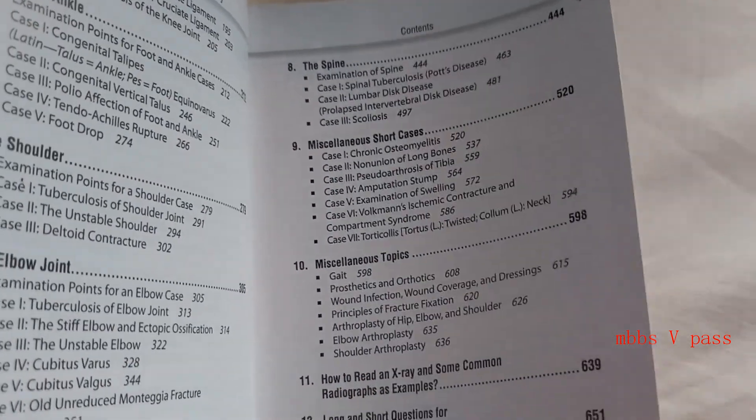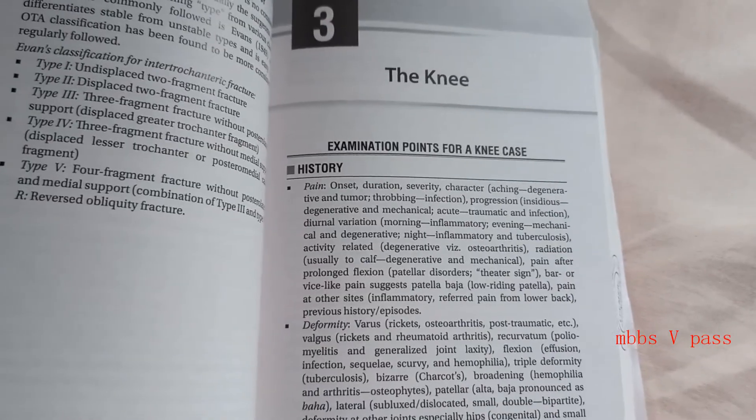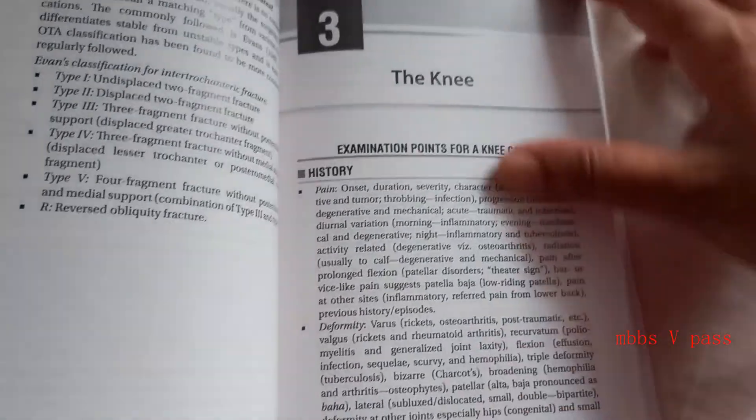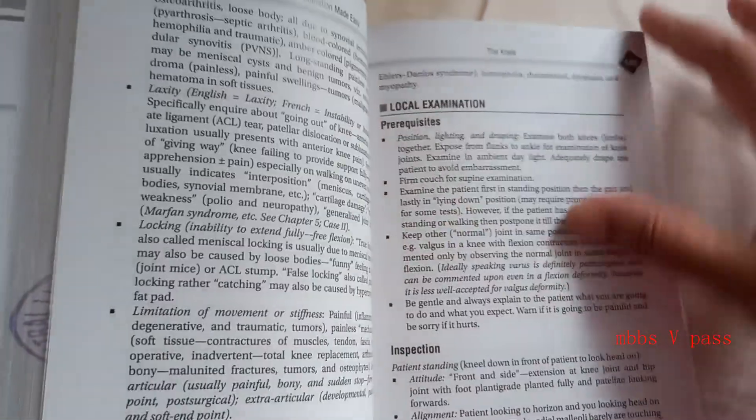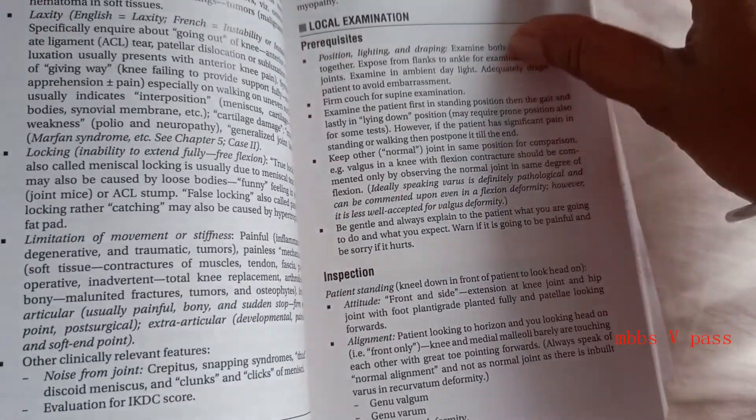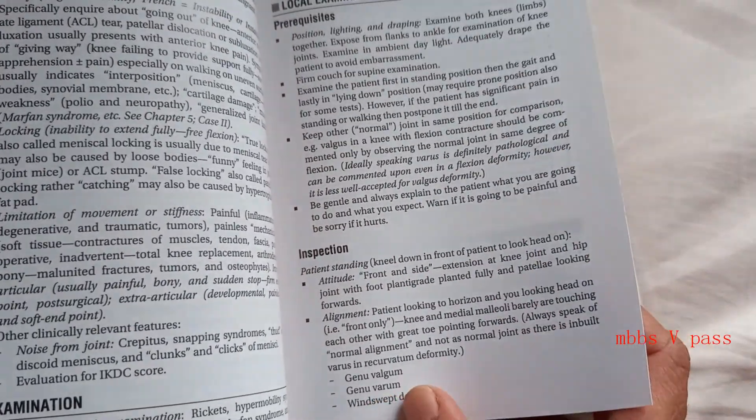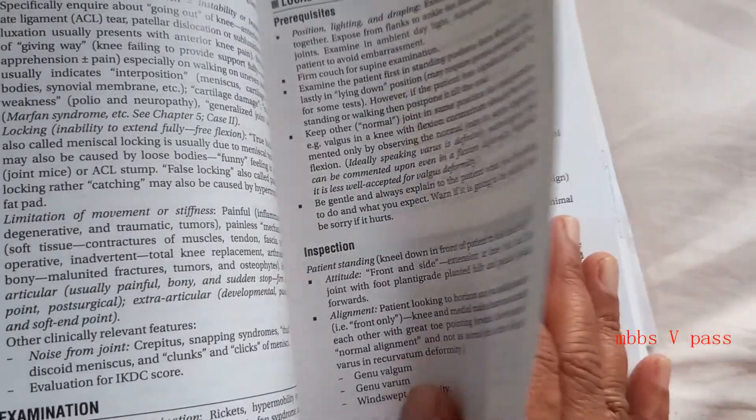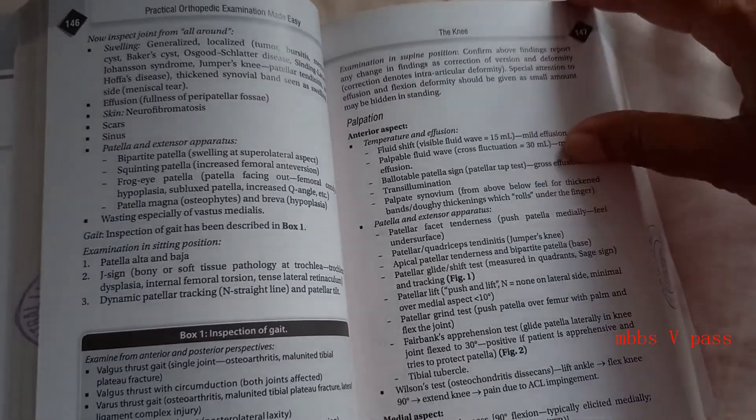So let's look at some things here and there. The knee. What are the local examination points? The position, inspection, genu valgum, genu varum, windswept deformity. See they didn't give photos, which is really bad. I think there should be more photos. Then only we will understand, isn't it?